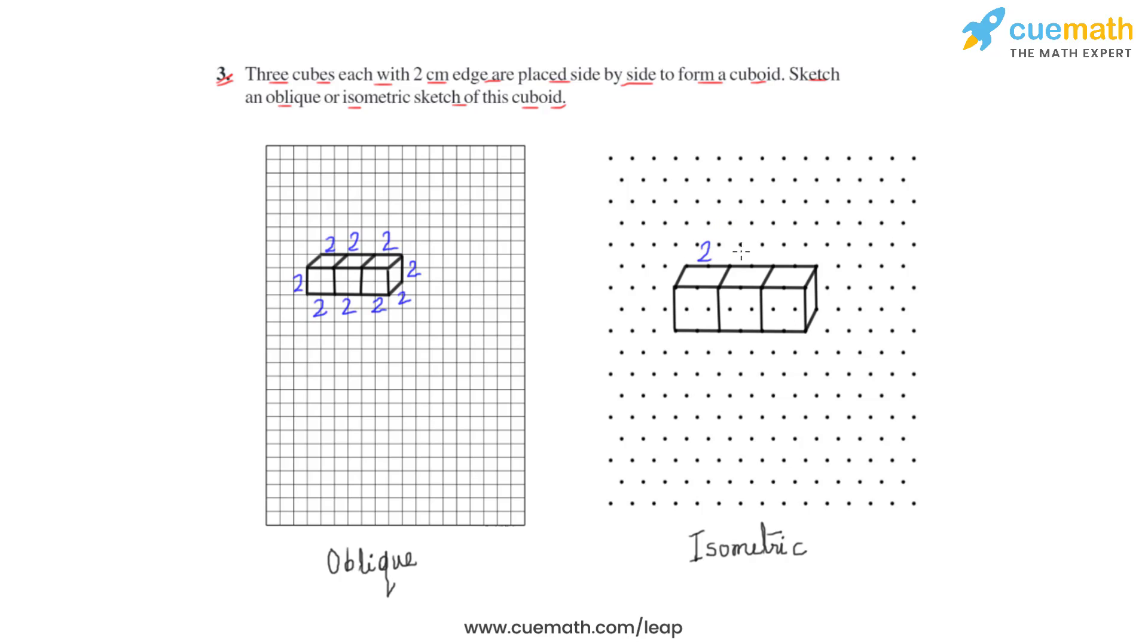It is two, and this is how this cuboid formed by these three cubes would be represented in an isometric dot sheet as an isometric sketch. This is how we are going to answer question number three of this exercise.